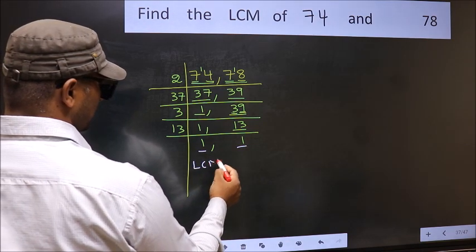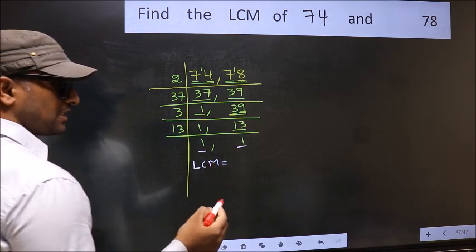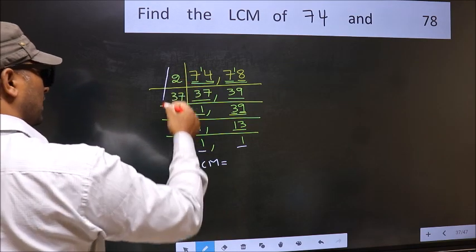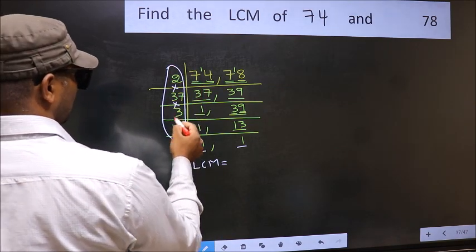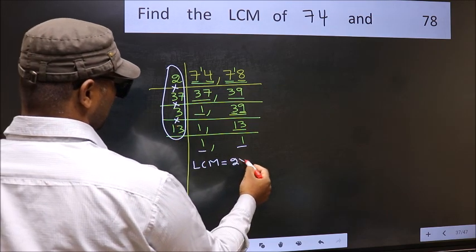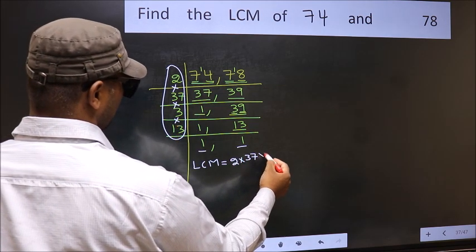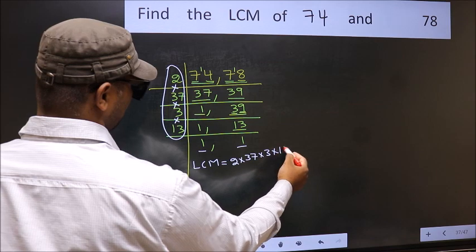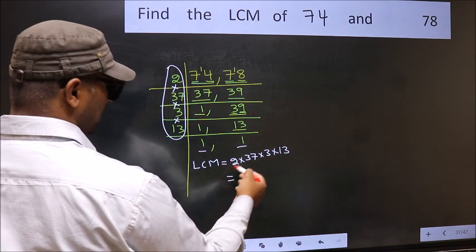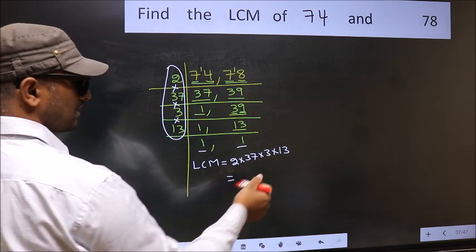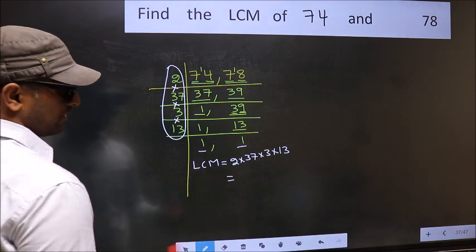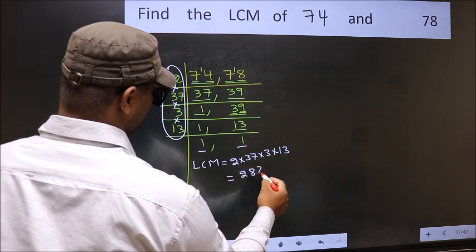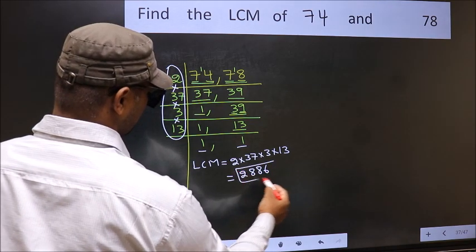So our LCM is, LCM is the product of these numbers. That is 2 into 37 into 3 into 13. When we multiply these numbers, we get 2886 is our LCM.